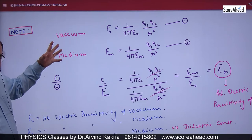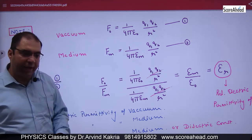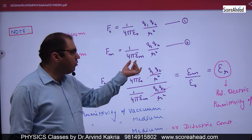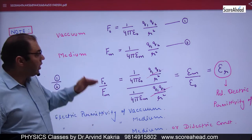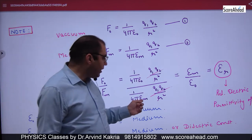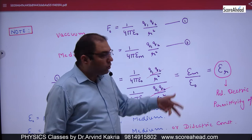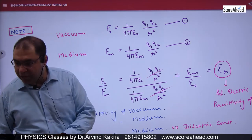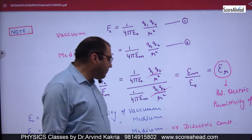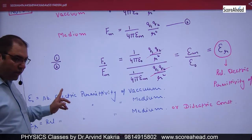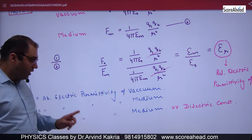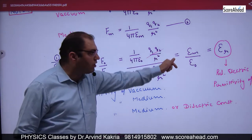If the medium is vacuum, the force is F₀ = (1/4πε₀)(Q1Q2/R²). If there is a medium, the force is F_M = (1/4πε_M)(Q1Q2/R²). Dividing F₀ by F_M, the Q1Q2/R² and 4π cancel, leaving ε_M/ε₀. This ratio is written as ε_R — relative electrical permittivity of the medium.